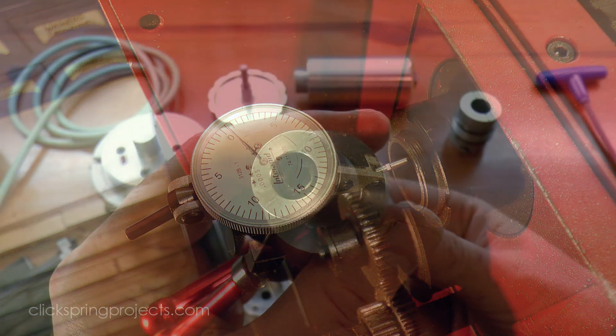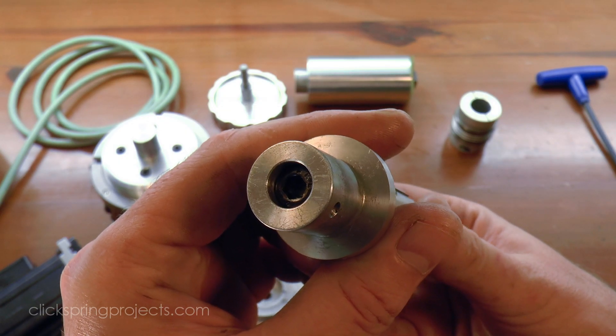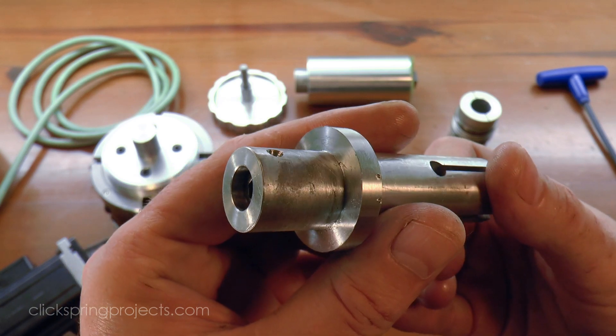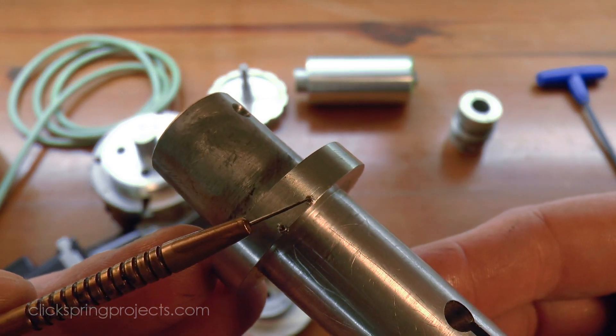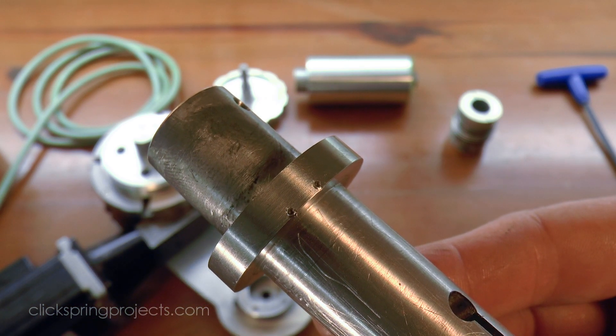So the solution that I came up with was to turn an eccentric spigot on the end of the mandrel, and then mount it in such an orientation so as to cancel out most of the error. If you look closely, you can see a pair of witness marks that help me make sure that I get it into the correct orientation each time that I use it.